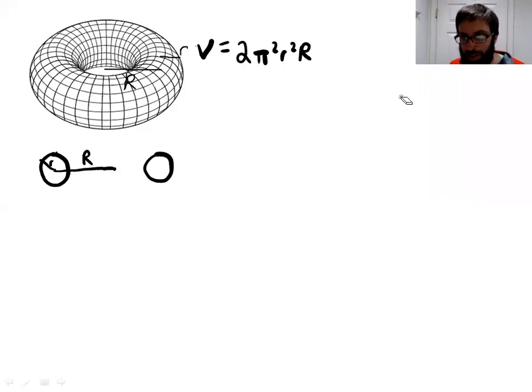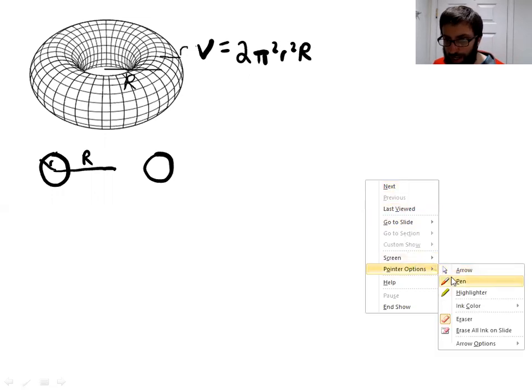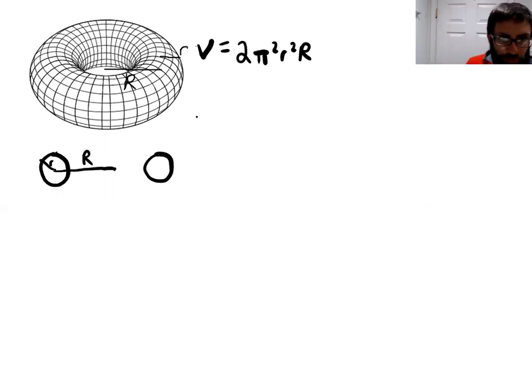In this video, we're going to calculate the volume of a torus. A torus is a donut-type object defined by two radii. One radius starts from the center and goes to the center of the tube, denoted by capital R. The other is denoted by lowercase r, which tells you the radius or thickness of the torus itself. The volume is given by 2π²r²R, and there are several ways to calculate this. We're going to calculate it using calculus.